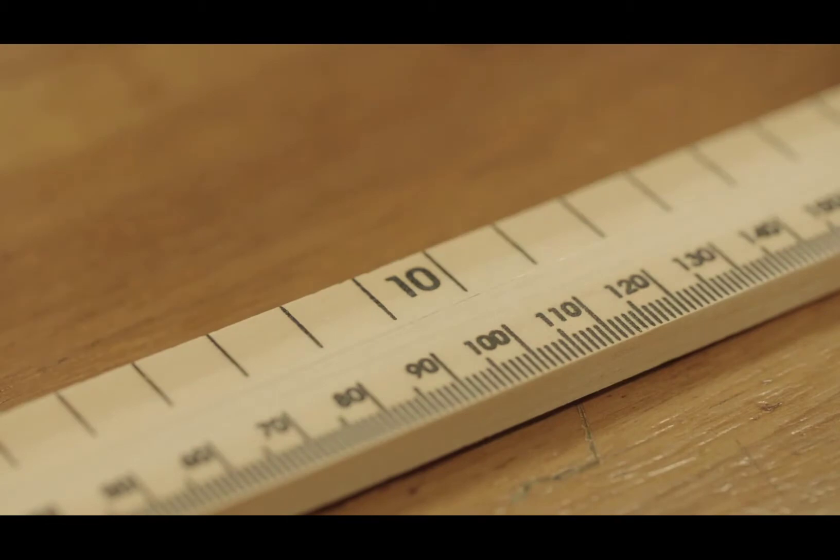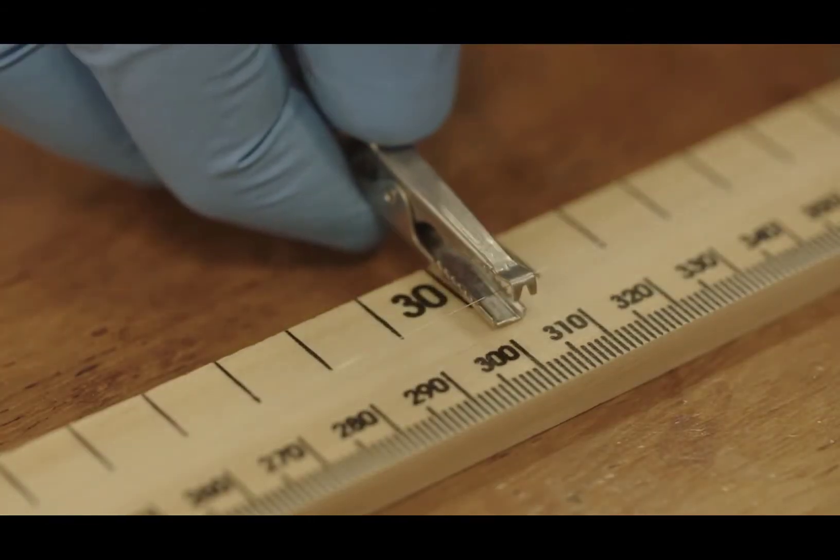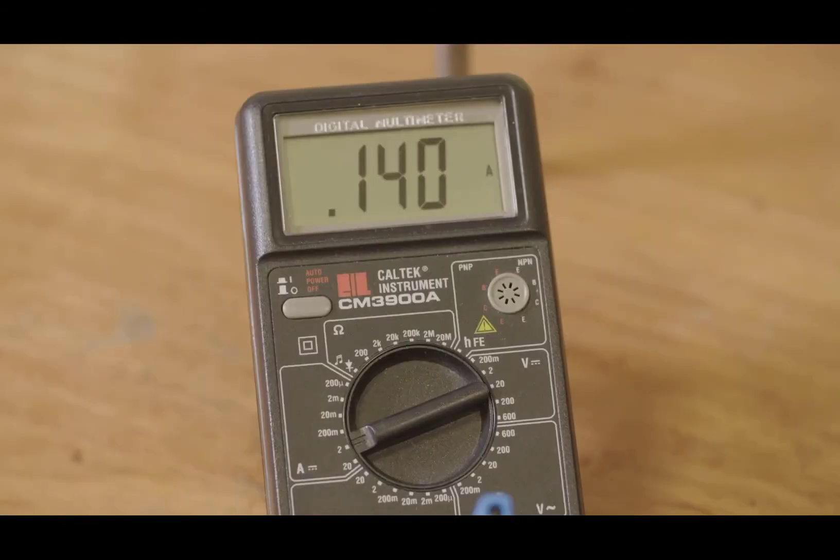The crocodile clip is now moved from the 10cm to the 30cm point. The levels on the ammeter and voltmeter are recorded.